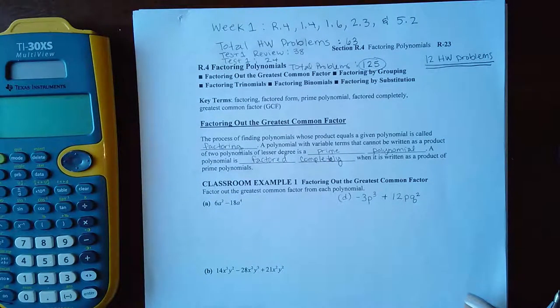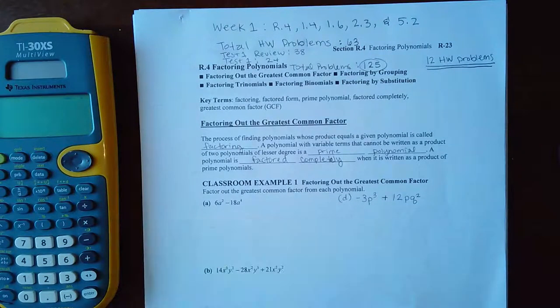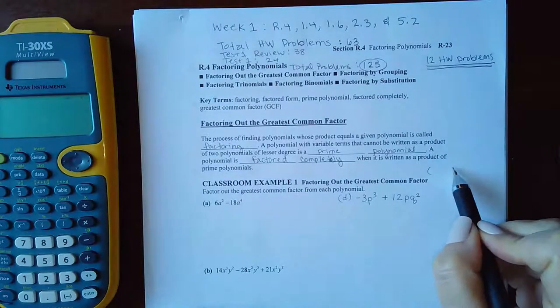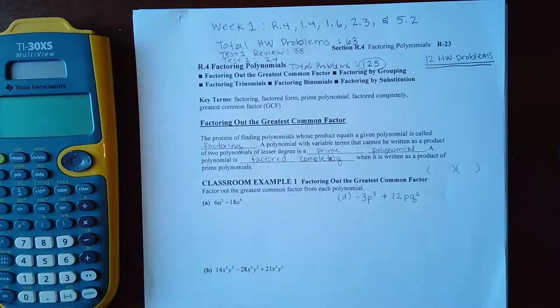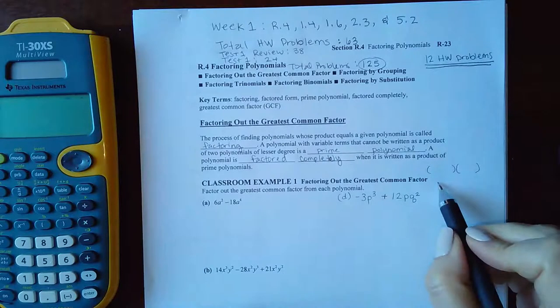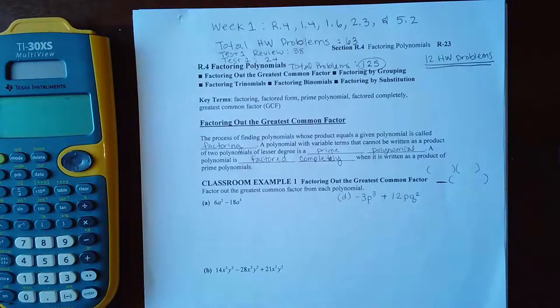So let's see what we've got here. If I can take an expression here, a polynomial, and if I can write it as two smaller polynomials multiplied together, that's the process of factoring.